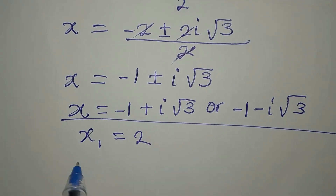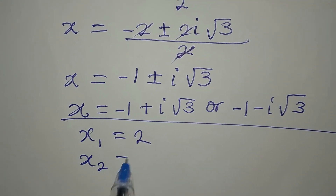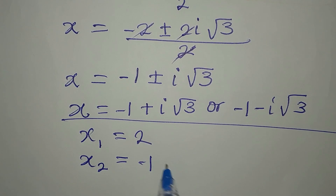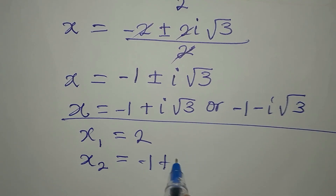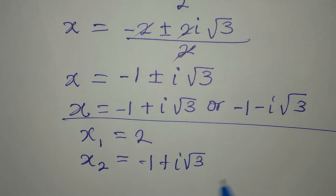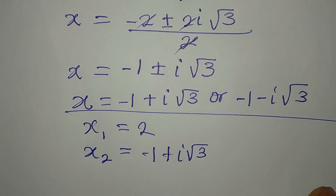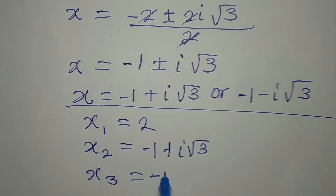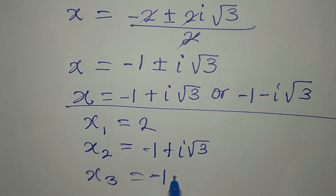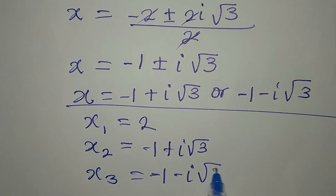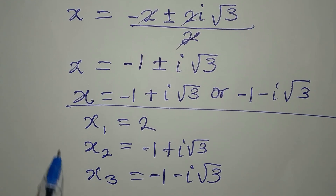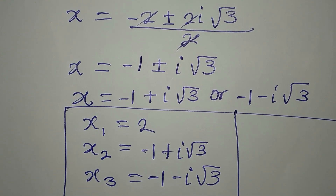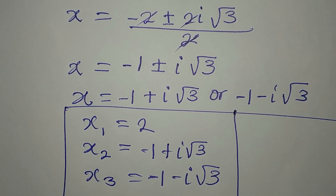Now let's bring the three solutions together. We got x₁ equals 2 from the first factor. Then x₂ equals negative 1 plus i root 3, and x₃ equals negative 1 minus i root 3. These three are the complete solutions to the equation.